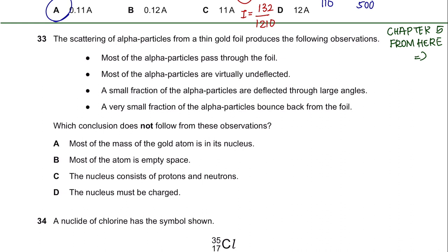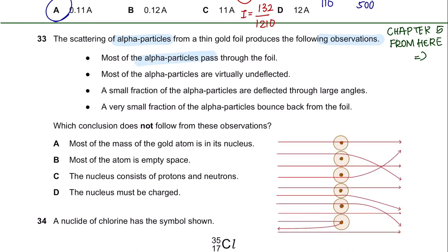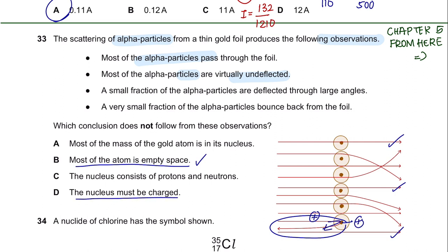Question 33. The scattering of alpha particles from a thin gold foil produces these observations. Most alpha particles pass through the foil because most of the atom is empty space. Most alpha particles are only slightly deflected because the alpha particles are positively charged and so is the nucleus—they repel each other, telling us the nucleus must be charged. A small fraction of alpha particles are deflected through large angles, proving the existence of a nucleus at the center of the atom containing most of the mass.